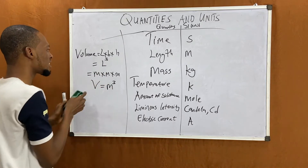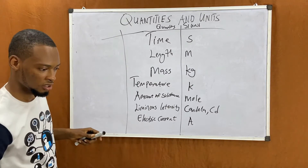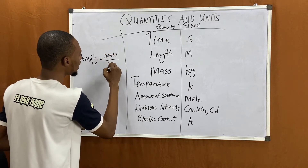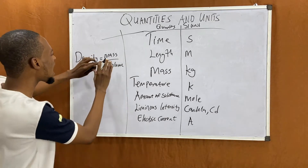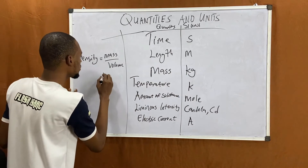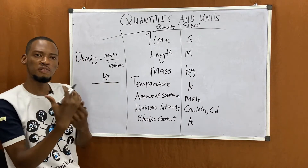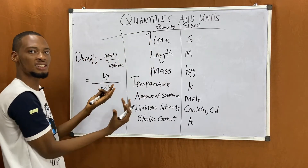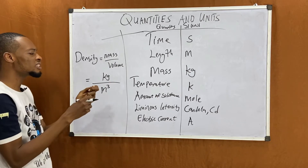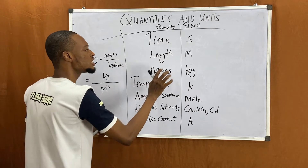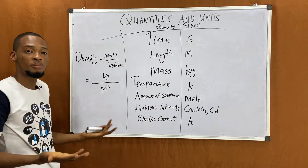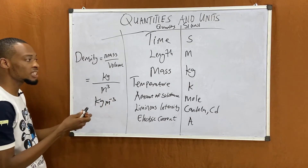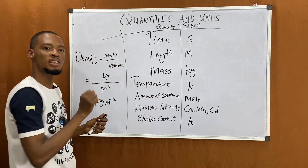If that's not clear, take a look at density. Density equals mass over volume. Mass is a fundamental quantity with unit kilograms (kg), and we just solved that volume is meter cubed (m³). So density is gotten from a combination of fundamental quantities, and the unit of density is kilogram per meter cubed (kg/m³).